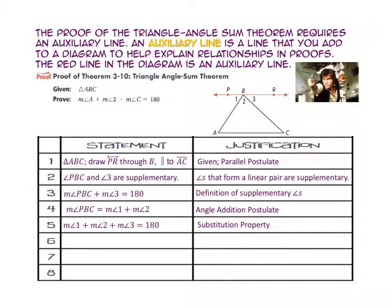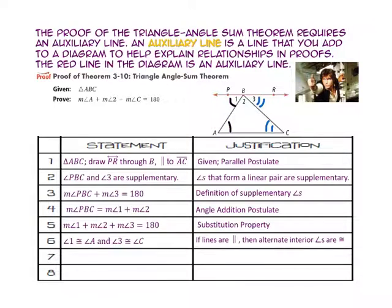In step six, angle 1 is congruent to angle A, and angle 3 is congruent to angle C because alternate interior angles are congruent when we have parallel lines. Since line PR is parallel to line AC, our alternate interior angles are congruent. For step seven, the measure of angle 1 is equal to the measure of angle A, and the measure of angle 3 is equal to the measure of angle C because congruent angles have equal measures.